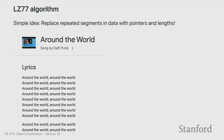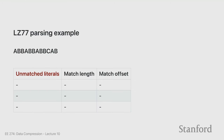Let's do an example. LZ77 takes a sequence and divides it into three streams: unmatched literals, match length, and match offset. The first character A has never been seen before, so it goes into an unmatched literal. B also goes into unmatched literals. The next B has been seen before — it's a match of length 1 at offset 1, because it occurred just one character before.